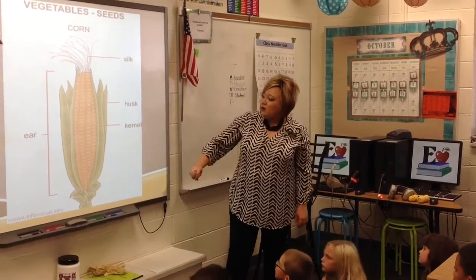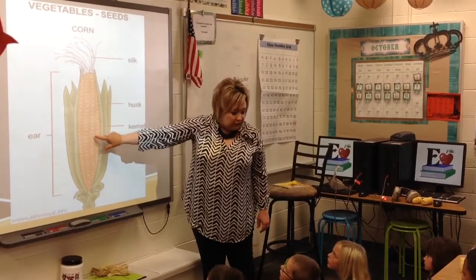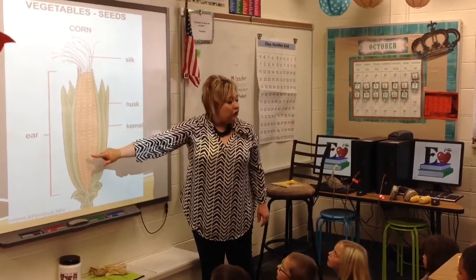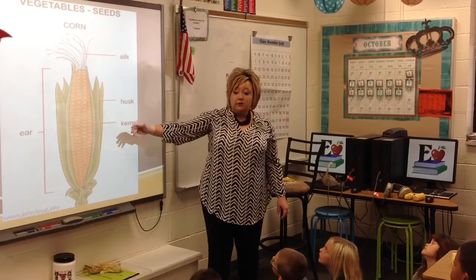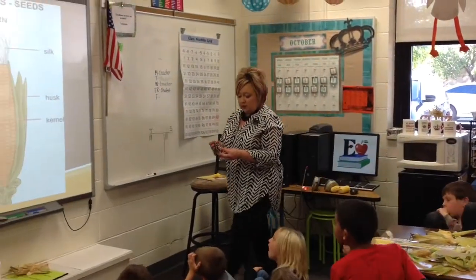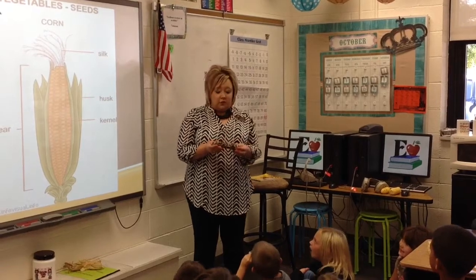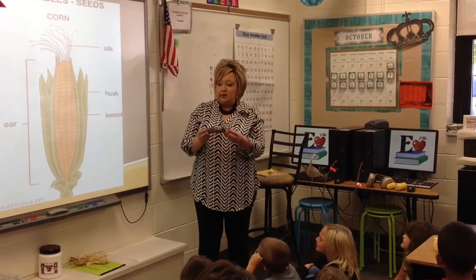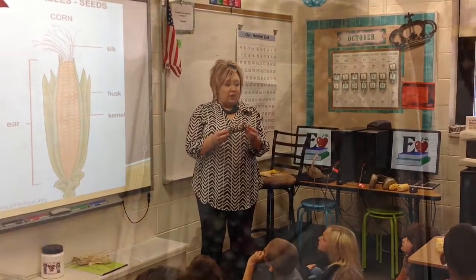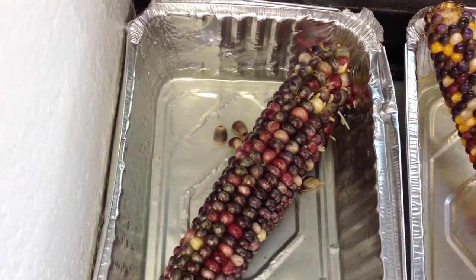So let's take a look. We said each one of these is called a kernel, but each one is actually an individual seed on your Indian corn. Each one of you has an ear of corn that's in water, and we're looking to see if it's going to sprout — we're looking to see if it germinates.